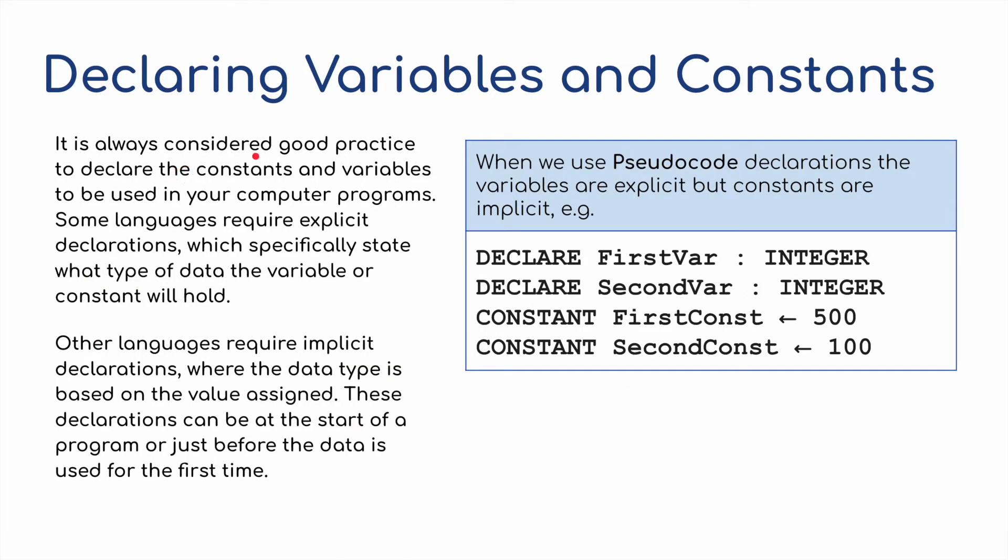It is always considered good practice to declare the constants and variables to be used in your computer programs. Some languages require explicit declarations, which specifically state what type of data the variable or the constant will hold. Other languages require implicit declarations, where the data type is based on the value assigned to it. These declarations can be at the start of the program or just before the data is used for the first time.